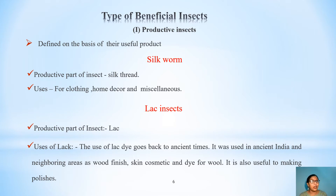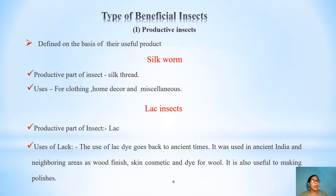Second one is lac insect. This practice is also known as lac culture. It is also the process of lac insect rearing. The productive part of the lac insect is lac, and lac is very useful to human beings. It is also used for dyes and different human-related uses.